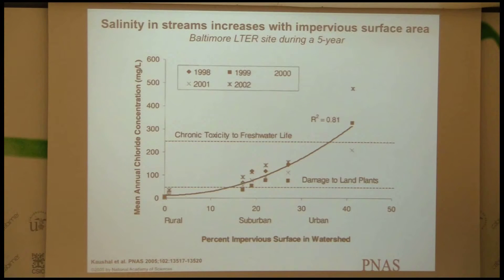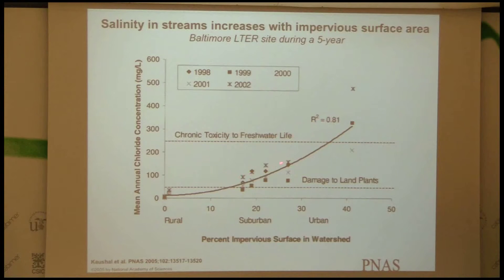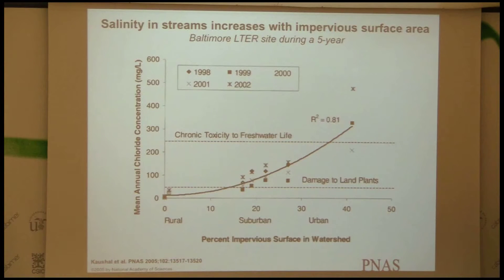If you think about freshwater animals physiologically, there's a chronic toxicity level for freshwater life. Depending on the species and type of animal it varies, but you can see from rural to urban there's increasing salinity and chloride levels in particular approaching or within the range where it's sublethal but may have important effects on wildlife.